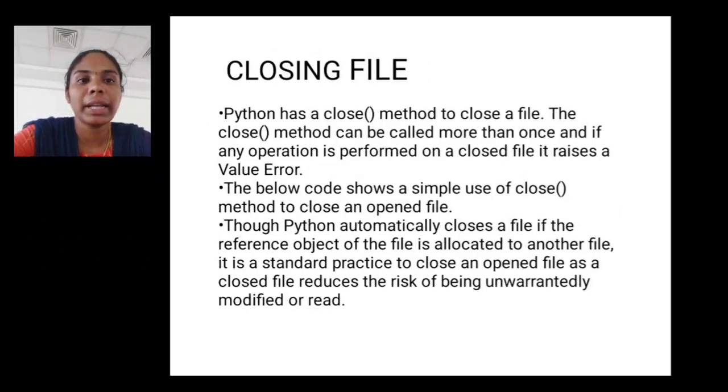Closing file. Python has a close method to close a file. The close method can be called more than once. If any operation is performed on a closed file, it raises a ValueError. The below code shows a simple use of close method to close an opened file. Python automatically closes a file if the reference object in the file is allocated to another file. It is standard practice to close an opened file as a closed file reduces the risk of being unwantedly modified or read.